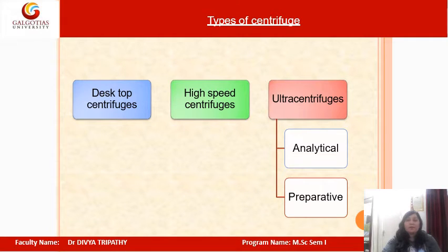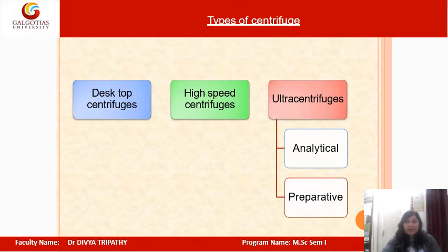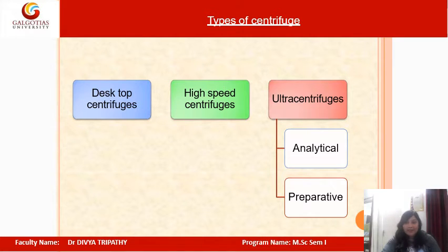Coming to the different types of centrifuges: centrifuges are divided into three categories — desktop centrifuges, high-speed centrifuges, and ultracentrifuges. Ultracentrifuges are further divided into two types: analytical and preparative. They differ from each other in terms of RCF, RPM, applications, size, and other features.